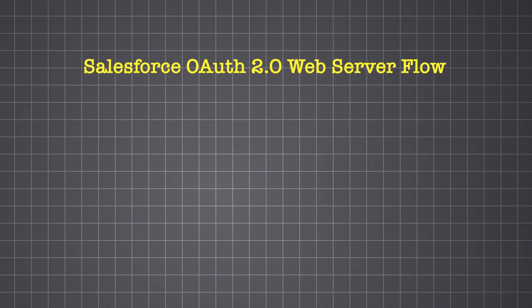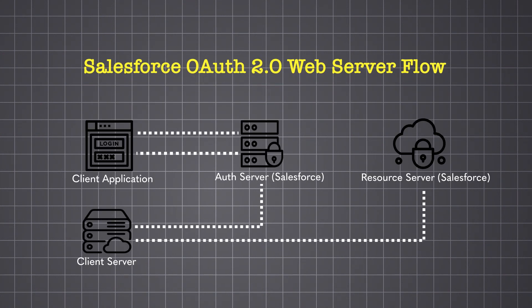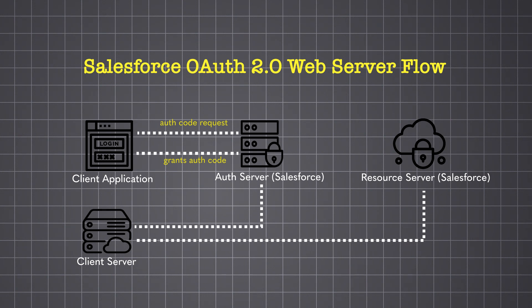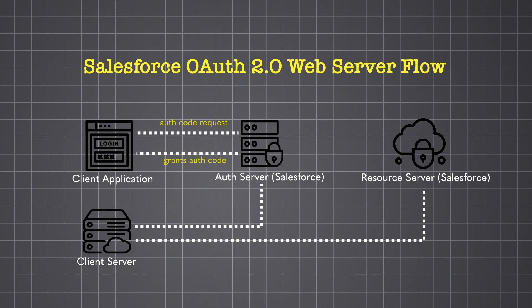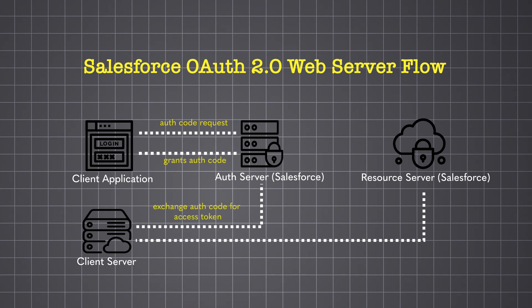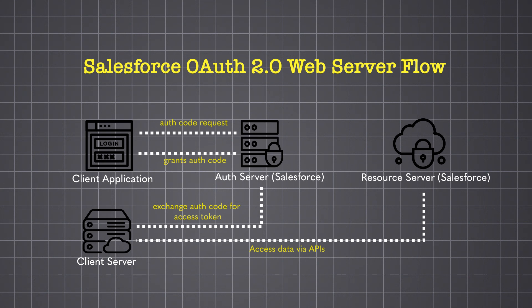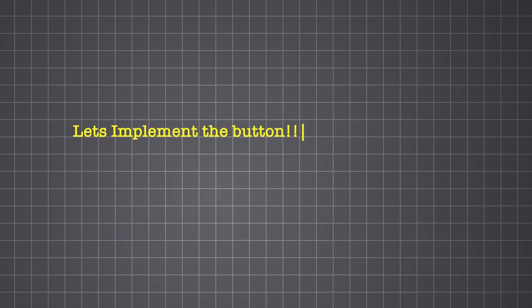For our scenario, we'll be using the OAuth 2.0 web server flow. This flow is based on the authorization code grant type, where Salesforce provides an authorization code after the user grants access. Our application then exchanges this code for an access token, which is used securely to access Salesforce APIs and fetch the required data.